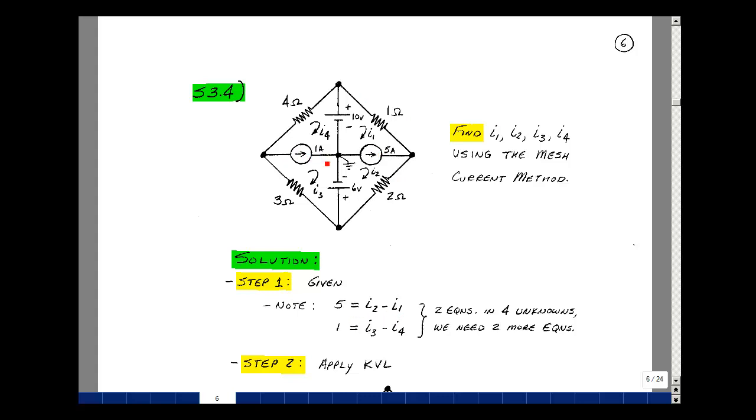Likewise, the 1-amp source, I3 is in the same direction, and I4 is in the opposite direction. 1-amp is equal to I3 minus I4. Now we have two equations in our four unknowns. We just need two more equations to be able to solve for the four currents.